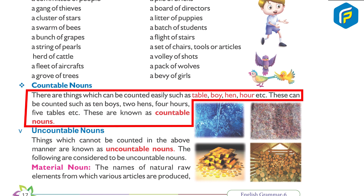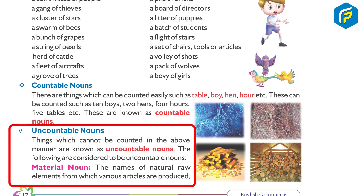Countable nouns: there are things which can be counted easily, such as table, boy, hen, etc. These can be counted as ten boys, two hands, four hours, five tables, etc. These are known as countable nouns. Uncountable nouns: things which cannot be counted in the above manner are known as uncountable nouns. For example: milk, water, air, money, food, etc.